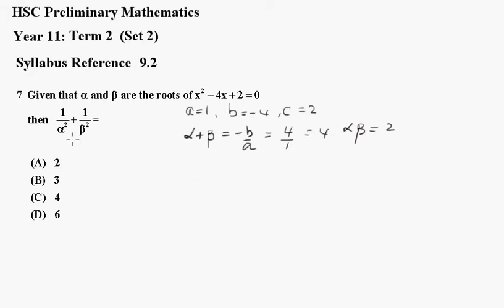Now rearranging this we'll have beta squared plus alpha squared all over alpha squared beta squared. From the previous video we know that alpha squared plus beta squared is alpha plus beta all squared minus 2 alpha beta.